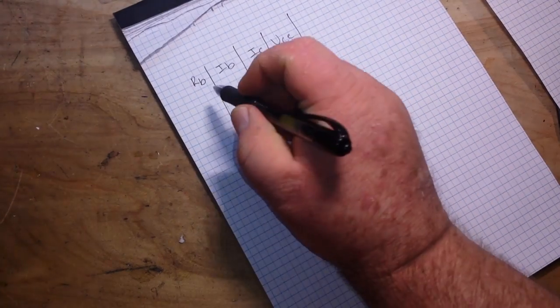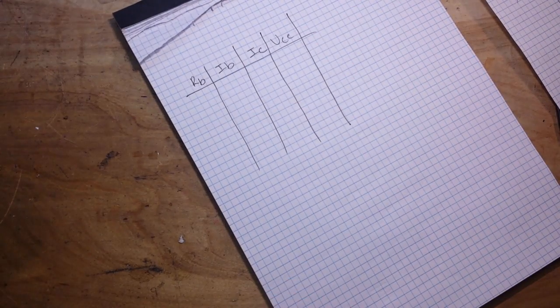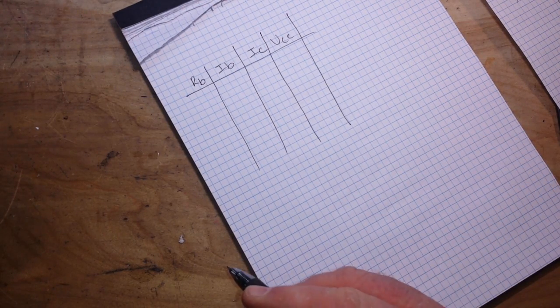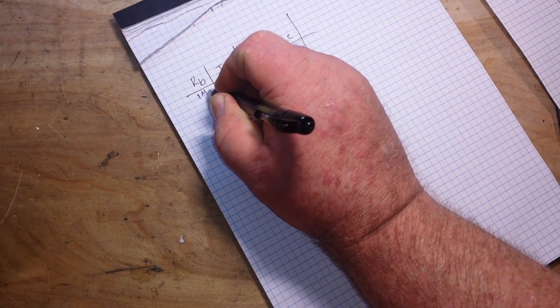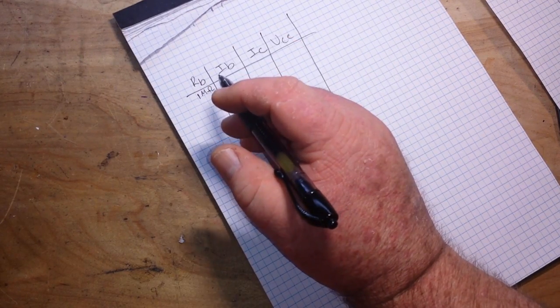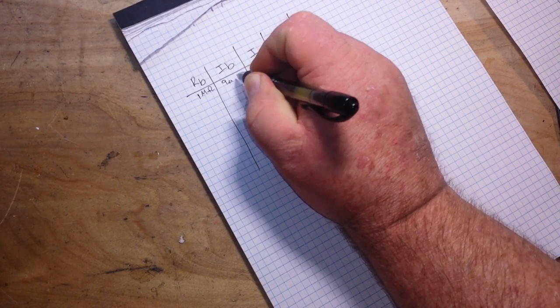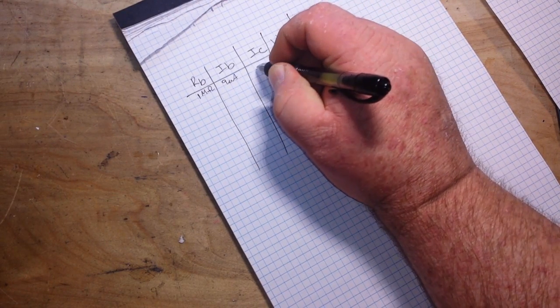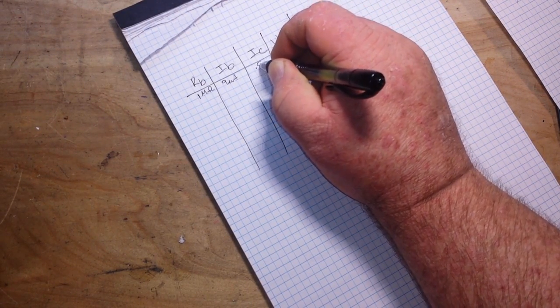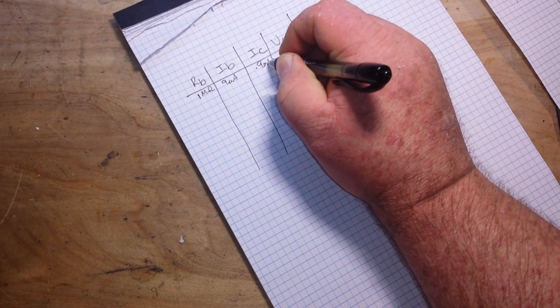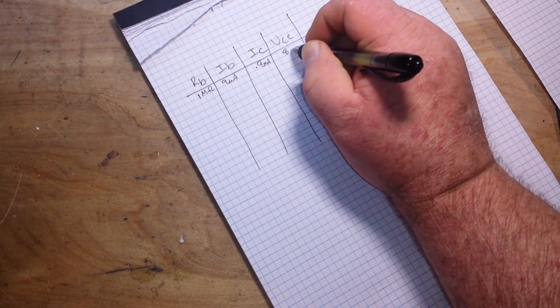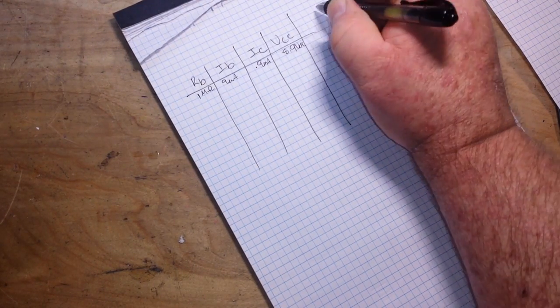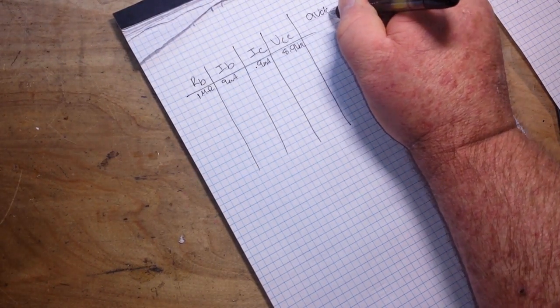Now, I've done this with a 2N2222 transistor. If you do it with something different, your results are going to be different. So we start out with 1 megaohm, at least I started out with 1 megaohm, and we get 9 microamps of base current. And we get 0.9 milliamps of collector current, and 8.1 volts DC. We're doing this at 9 volts, by the way, 9 volts DC.